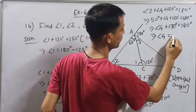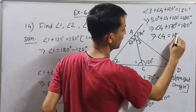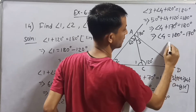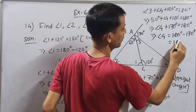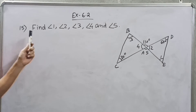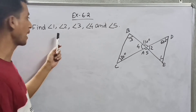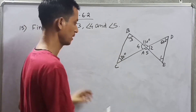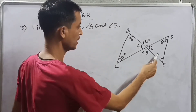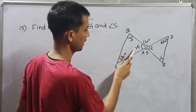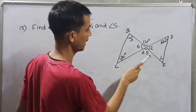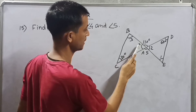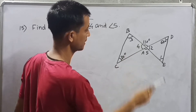Now find Angle 1, Angle 2, Angle 3, Angle 4, and Angle 5 — this angle, this angle, this angle, this angle, and this angle.